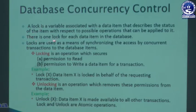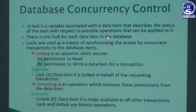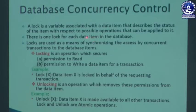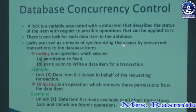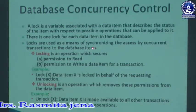There is one lock for each data item in the database. If we have a data item X, it can hold only one lock — meaning it can be locked by only one transaction simultaneously. If it is locked by one transaction, it cannot be locked by another transaction until it is unlocked. Locks are used as a means of synchronizing access by concurrent transactions to database items.